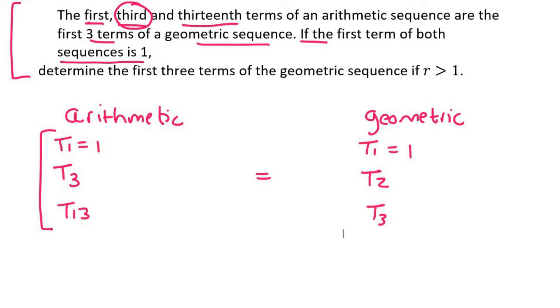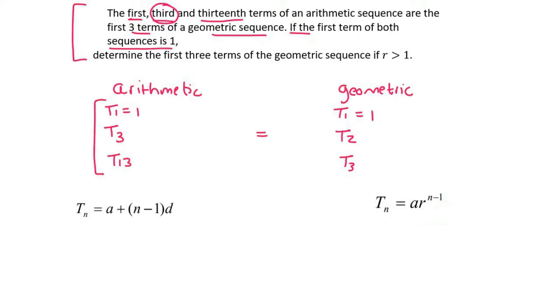What I would now do is use the formula for an arithmetic and also the formula for a geometric. And so for term three of the arithmetic, this one over here, that would simply be equal to a plus three minus one times d. So if you simplify that, that'll be a plus 2d. For term thirteen it'll be a plus thirteen minus one times d, which is a plus 12d. But we know what a is, remember a is 1. So we can go change all of these to a 1.